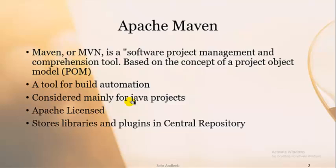Maven is a tool for build automation, considered mainly for Java projects. It is a project management tool. It is Apache licensed and stores libraries and plugins in the central repository. Apache Maven has its own central or remote repository where jar files and libraries are present, and it's very easy to install them on your system.